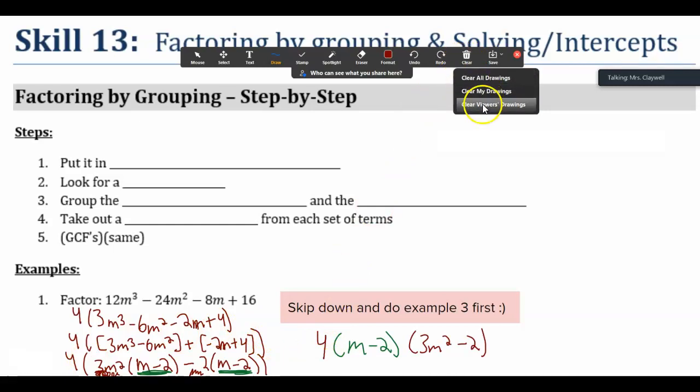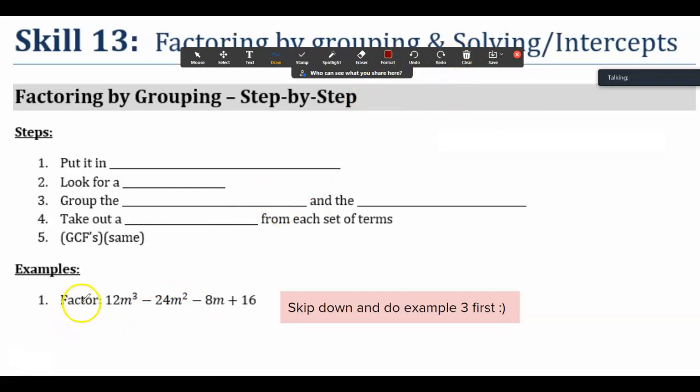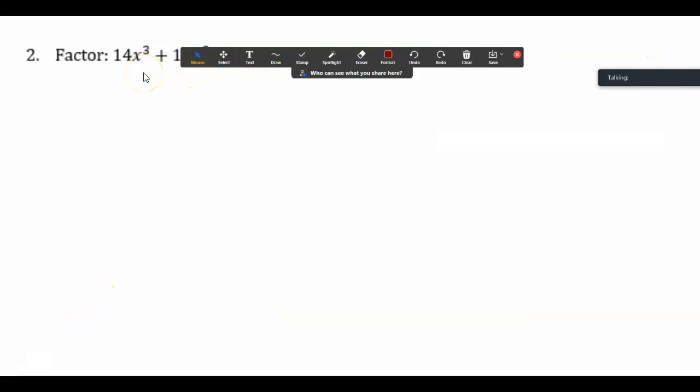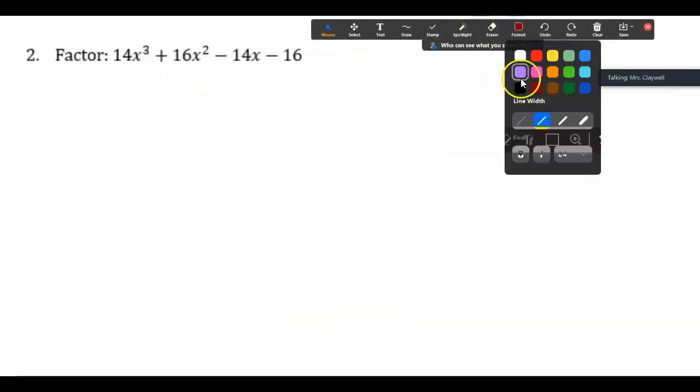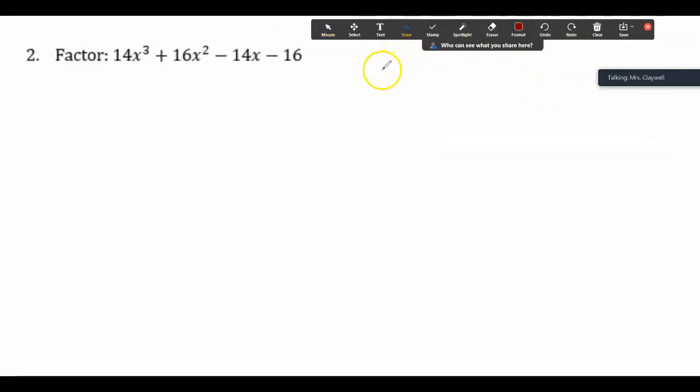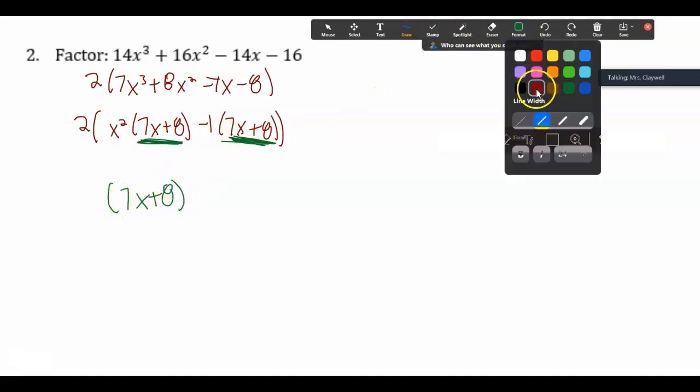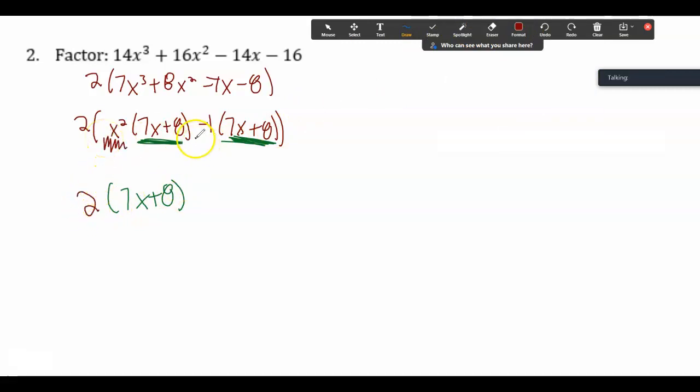Okay, we're going to jump down to number 2. Once again, you're thinking, do these have any greatest common factors? These all have a 2 in common. I'm going to group the first two. I need to make sure I have my matching after I factor out the greatest common factor. So I have my matching, and then here's my leftover.